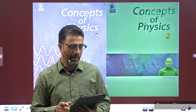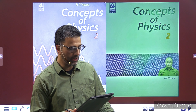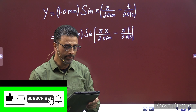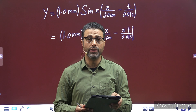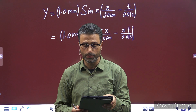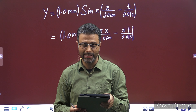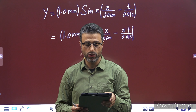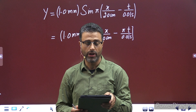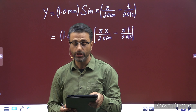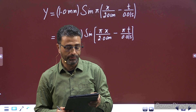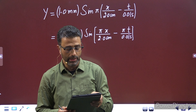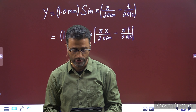Let me read out the problem. A wave is described by the equation y = 1.0 mm sin of pi. Part A: find the time period and the wavelength. Write the equation for the velocity of the particle. Find the speed of the particle at x = 1 cm at time t = 0.01 seconds. What are the speeds of the particle at x = 3 cm, 5 cm, 7 cm at t = 0.01 seconds?